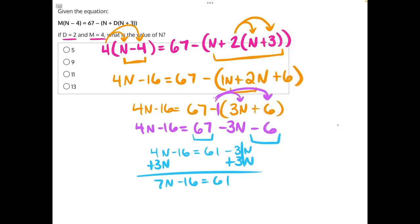Then, 16 is being subtracted, so the opposite operation is adding 16 to both sides. These will cancel, giving us 7n is equal to 1 plus 6 will give us 7, and 6 plus 1 will give us 7, so we'll have 77.